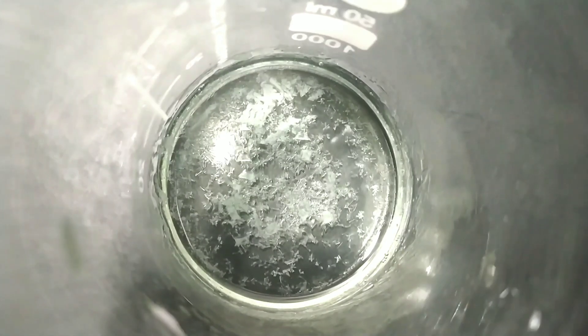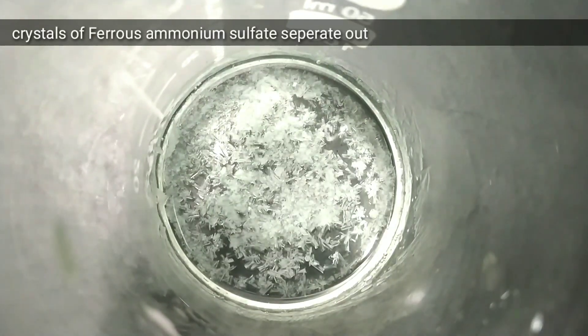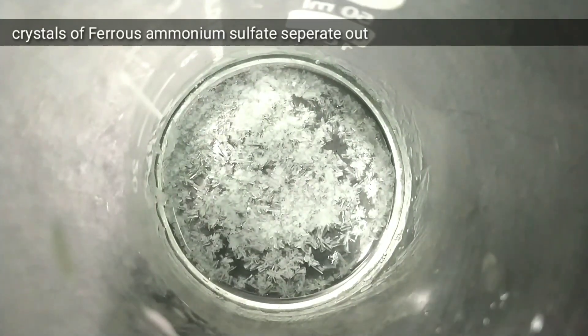If you see some crystals forming that means the crystallization point has been reached. So we cool the solution and on cooling the crystals of ferrous ammonium sulfate separate out.